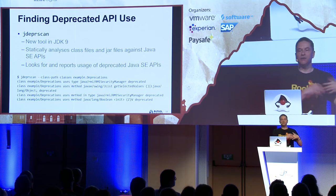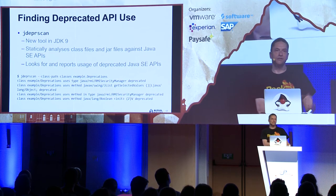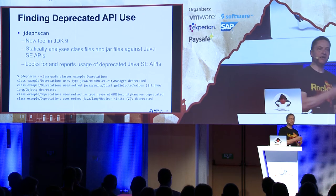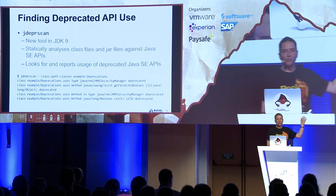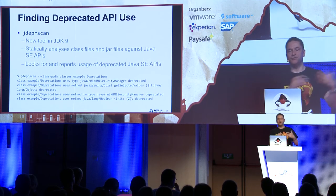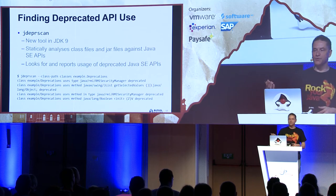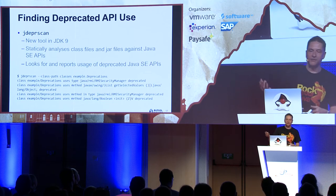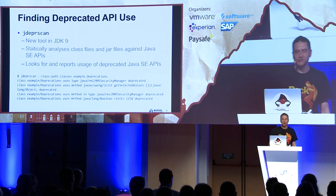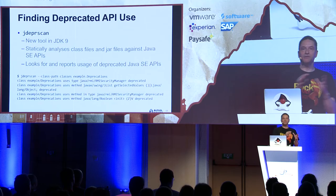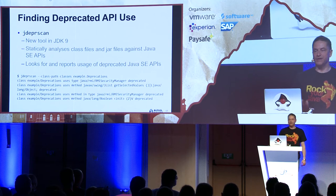A useful tool for finding deprecated APIs in your code is jdeprscan, which is new in JDK 9. It takes a class file or jar file and does static analysis to find any elements you've used that are deprecated. A simple example shows it reporting deprecated types and methods, giving you a list of things you might need to update when moving to newer versions of the platform.